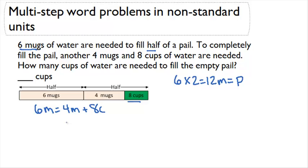Now since I can subtract the same thing from both sides of an equation without changing the value of the equation, I'm going to subtract four mugs from both sides. So if I subtract four mugs from both sides, that's going to cancel out my mugs on this side. Six minus four is going to be two mugs on this side, and I still have my eight cups on this side.